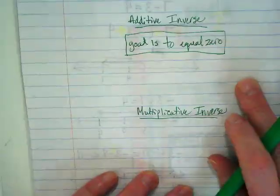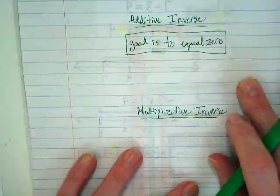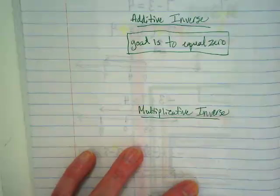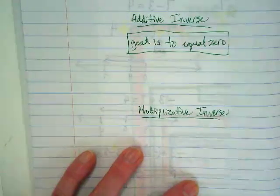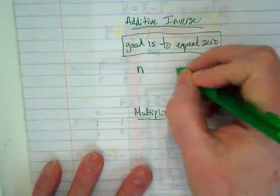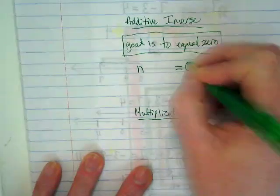In our example in the book, they were using the variable a. I like to use the variable n when we talk about this because the n stands for number. I mean, they all stand for number, but in my head it just starts with the same letter. So if I have an n, any number, and I want to add something to it to equal zero,